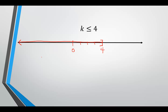Now write your interval notation — read your number line left to right. On the left, we said it never stops, so that's negative infinity, comma, and on the right it stops at 4, but we include 4, so we put the bracket. That interval notation indicates every number less than or equal to positive 4.